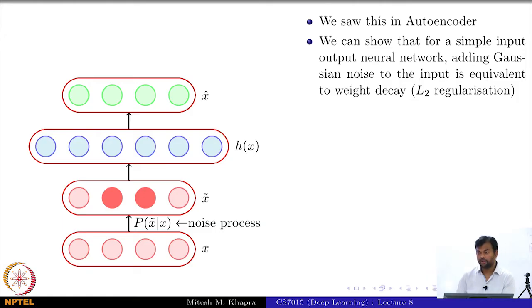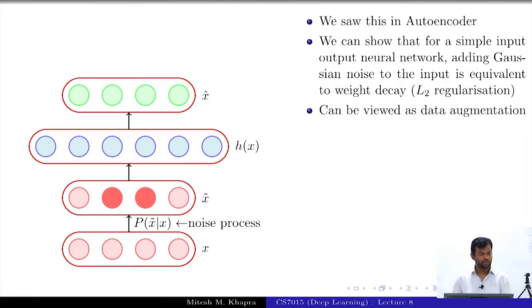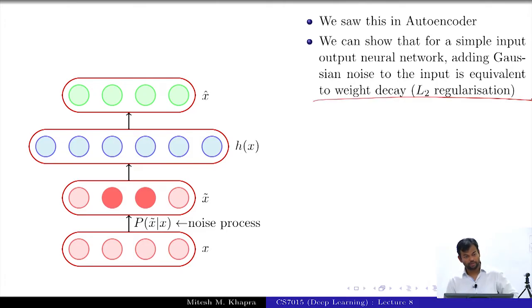Now, actually we can show that for a simple input output neural network, that means you do not have any hidden layer you just have a set of inputs and you have the output layer. Then adding noise to the input or rather adding Gaussian noise to the input is equivalent to weight decay. This can also be viewed. We will just quickly do a small derivation where we show that adding Gaussian noise to the inputs is the same as doing an L2 regularization. That is a very neat idea.